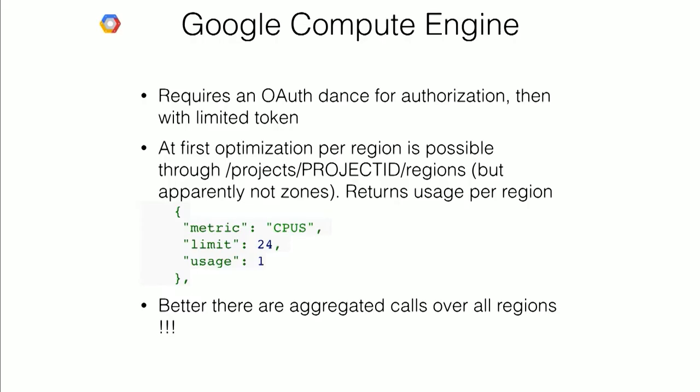The last one I decided to try yesterday afternoon is GCE, Google Compute Engine. You have a little OAuth authorization dance, then you get your token with limited time. I started to dig into the API and realized there was a project organization. Basically, you have project ID slash regions, and it tells you what is there. You ask and it says, for example, on CPUs I've got usage one — meaning I have one instance in this region. That's pretty cool. And even better, there are aggregated calls which basically give you everything in one call.